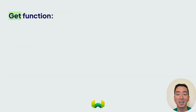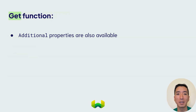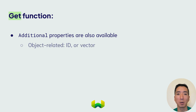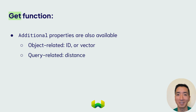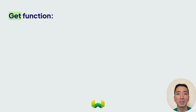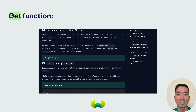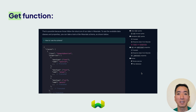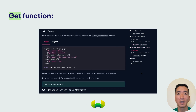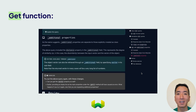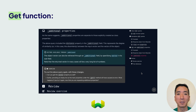You can also use the get function to retrieve additional properties that aren't explicitly defined in the schema. These could be inherent to the object like the ID or the vector, or related to the query performed like the distance. Below, we've built examples for you to try out for yourself. Follow the inline exercises to practice constructing different get queries, retrieving various properties, and working with additional fields.